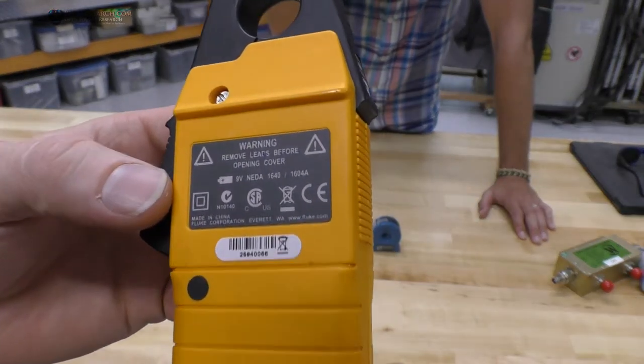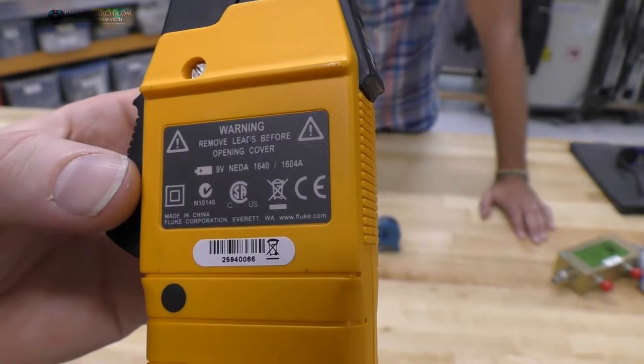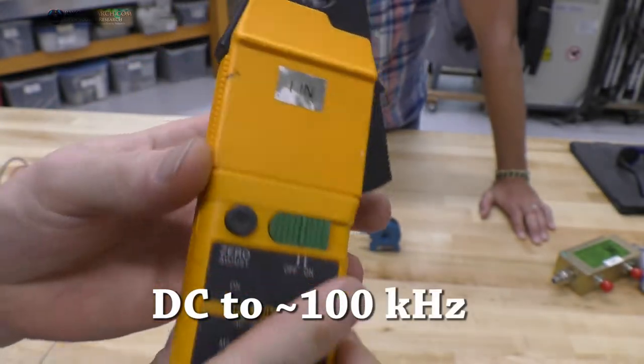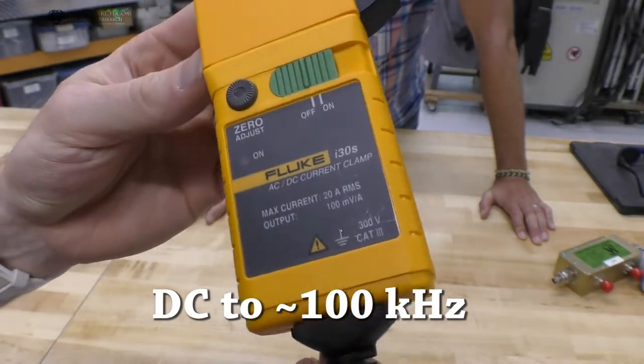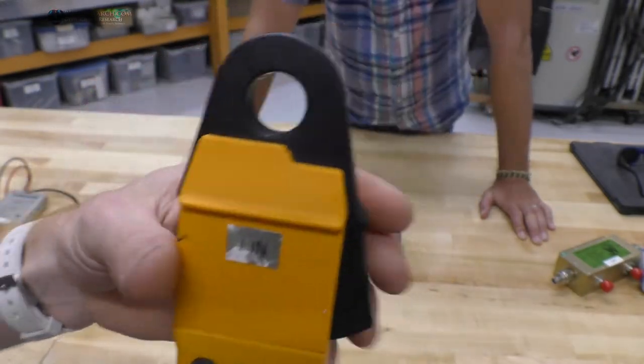That particular probe is good from, you could do 50 hertz measurements, and you can also do DC measurements with it, so you've kind of got the lower end frequencies very effectively covered with that.